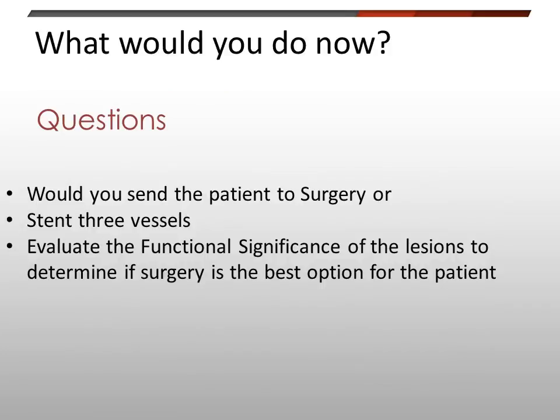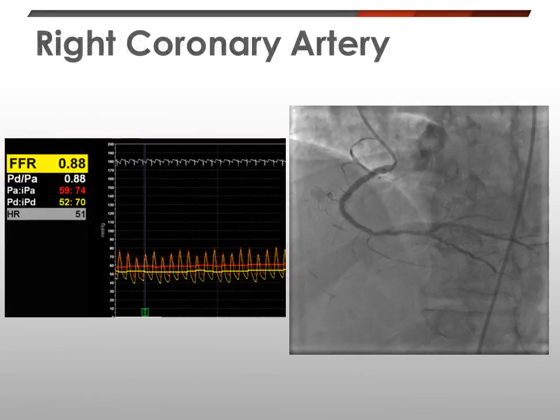So the question is: what would you do now? Option one is to send the patient to surgery. Option two is to perform three-vessel angioplasty. Option three is to evaluate the functional significance of each lesion to determine if surgery or PCI is the best option. I chose the third option.